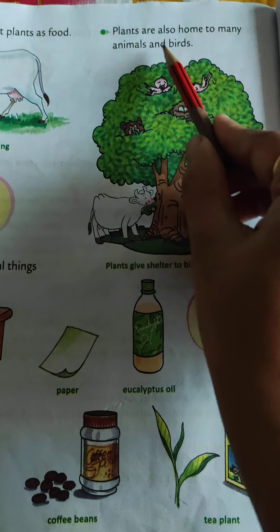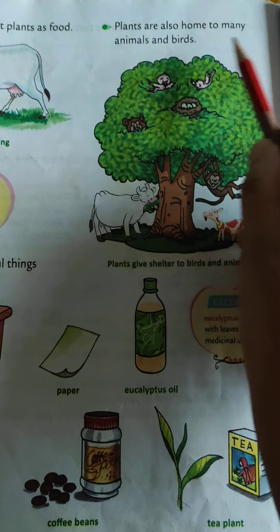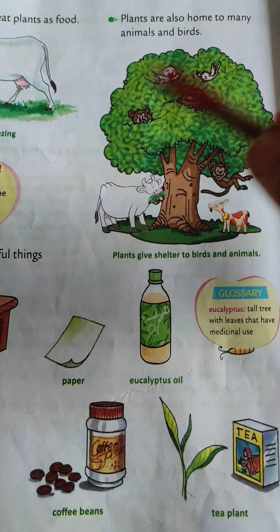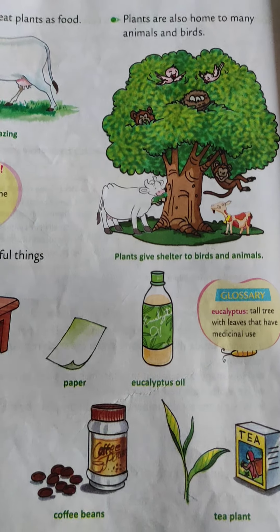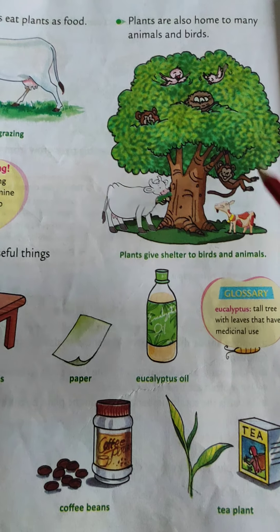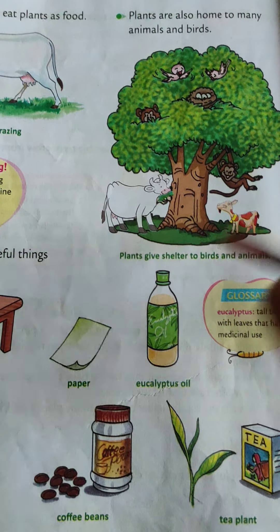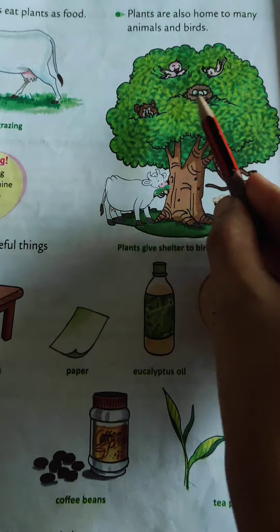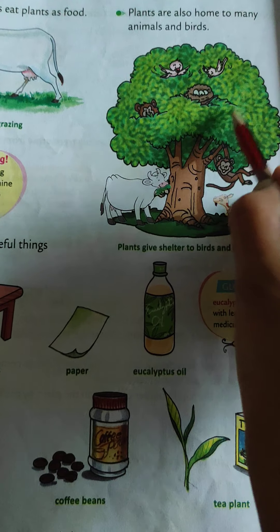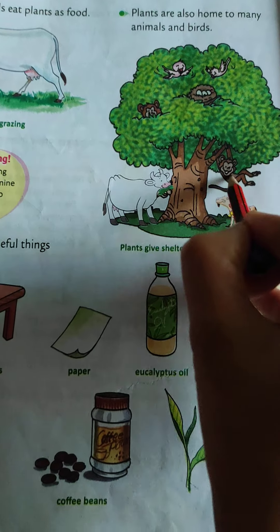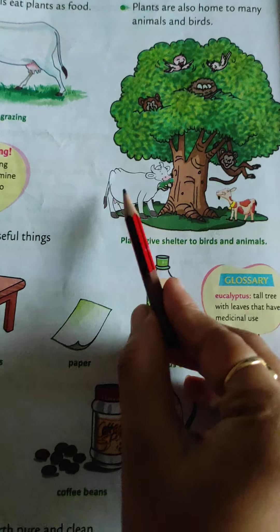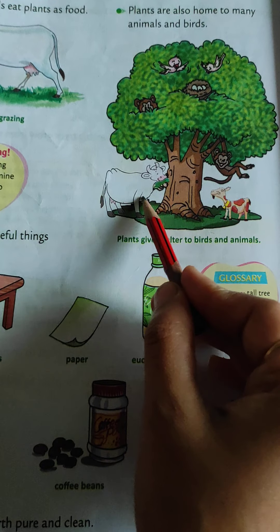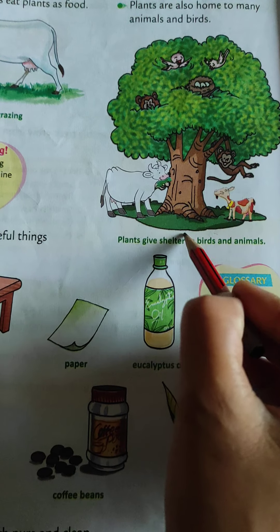Plants are also home to many animals and birds. Some birds are living on the plants and some animals take shade under the trees. Look at this picture — sparrows are making their nests on the tree, monkeys also live on the tree, and cows and goats take shade under the tree.